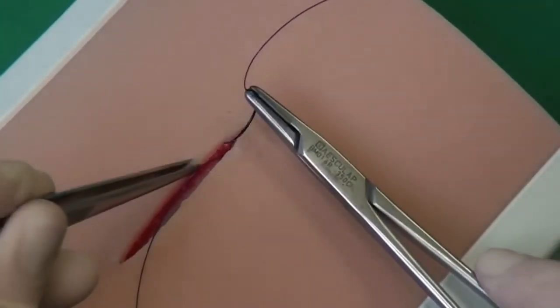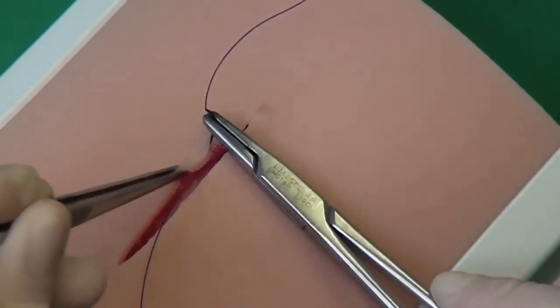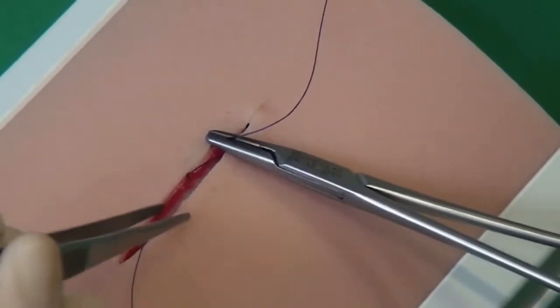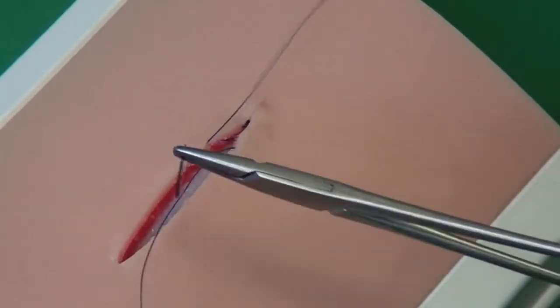The insertion on the opposite side is made approximately at the level of the previous exit point, so that the thread runs slightly diagonally to the wound gap when changing to the other side. Therefore, the overall suture becomes serpentine or meander-shaped.